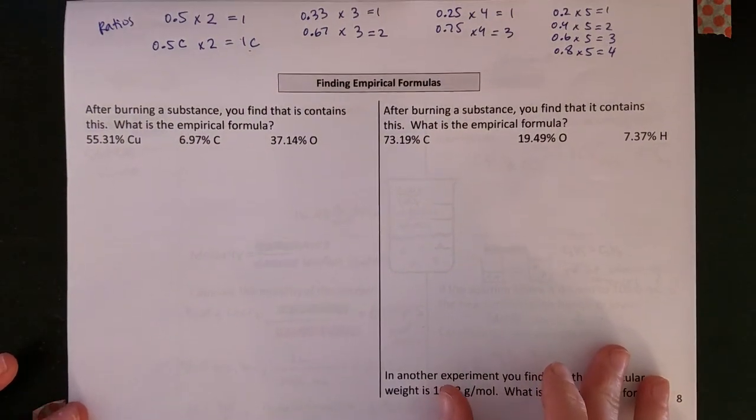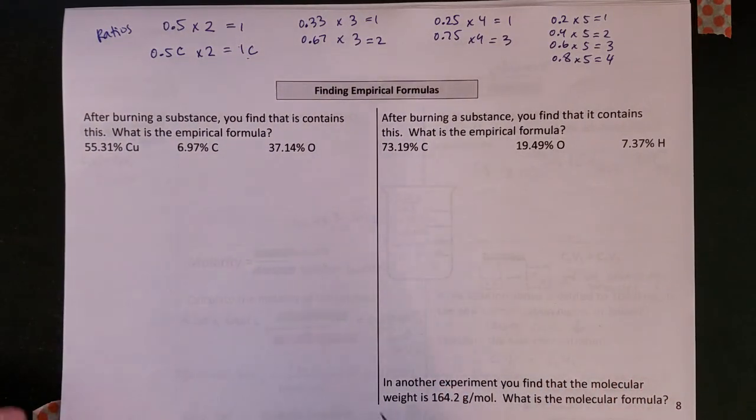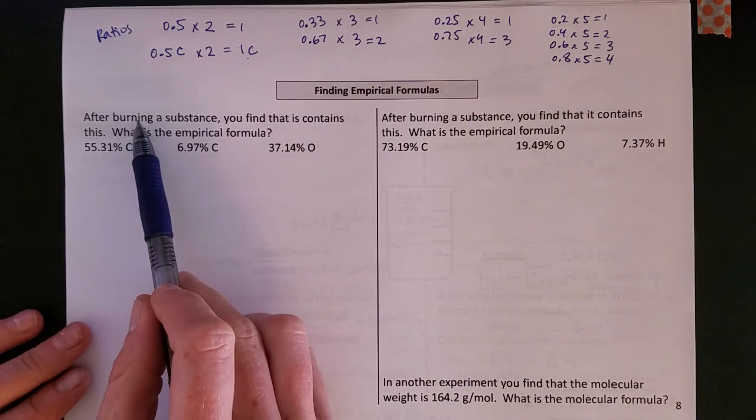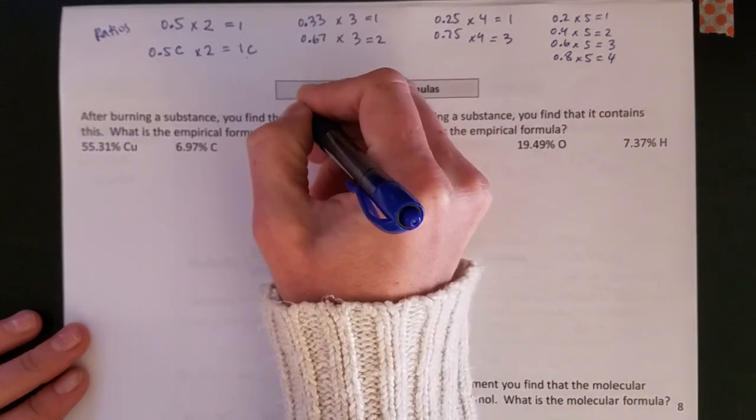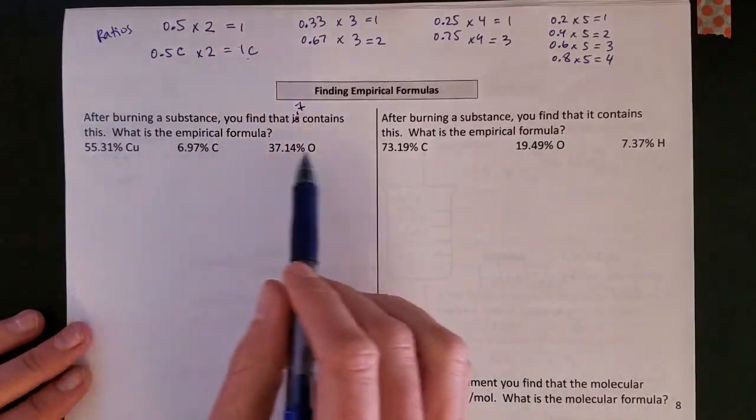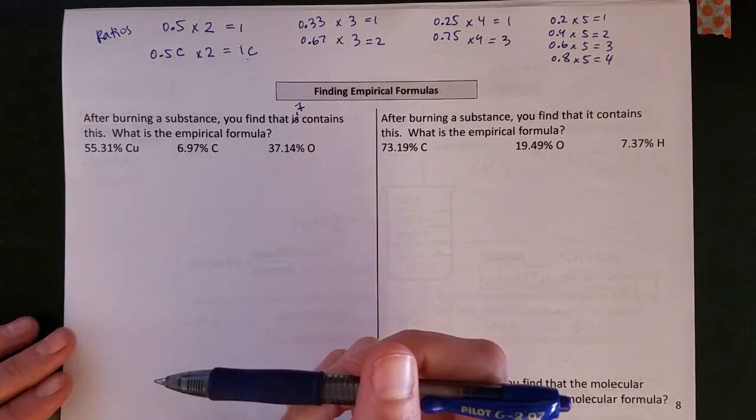We're going to take a look at another empirical formula problem here. So we burn a substance, we find out that it contains these mass percentages. What is the empirical formula?